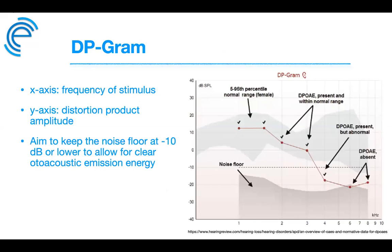DP recordings are commonly displayed as a DP-gram — a graphical display of sound intensity measured in the ear canal as a function of frequency — including the intensity of F1, F2, and the distortion product at pre-determined frequencies. The levels of the DPOAE and the noise floor are used to determine whether the DPOAE is present or absent — and if present, whether it is normal, normal but reduced, or absent.